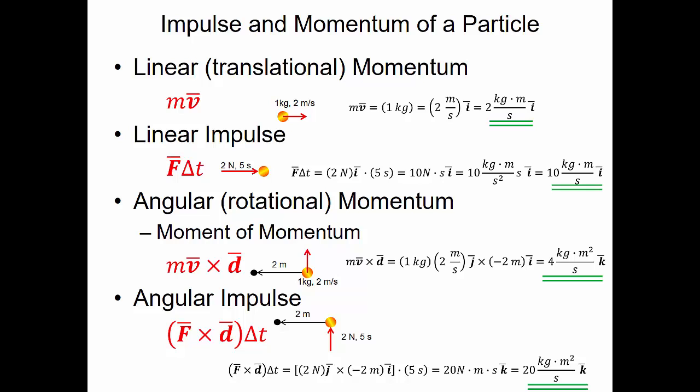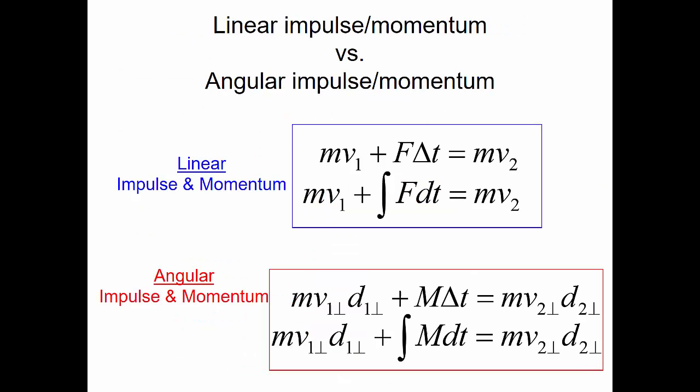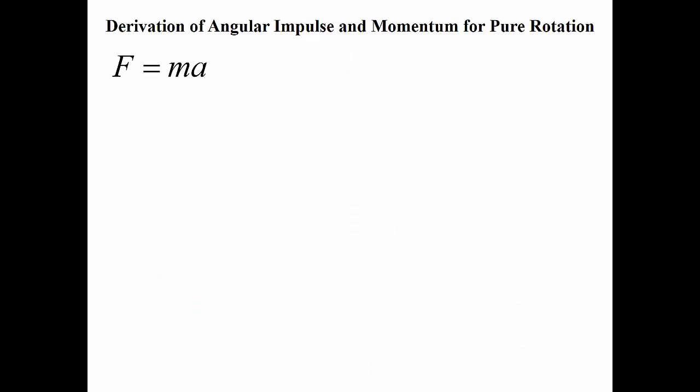We've talked about impulse and momentum of a particle, and we've defined linear momentum, linear impulse, angular or rotational momentum, and angular impulse. We've then taken those pieces and put them together into an impulse and momentum equation. We have linear impulse and momentum as well as angular impulse and momentum, and these are represented by two separate equations.